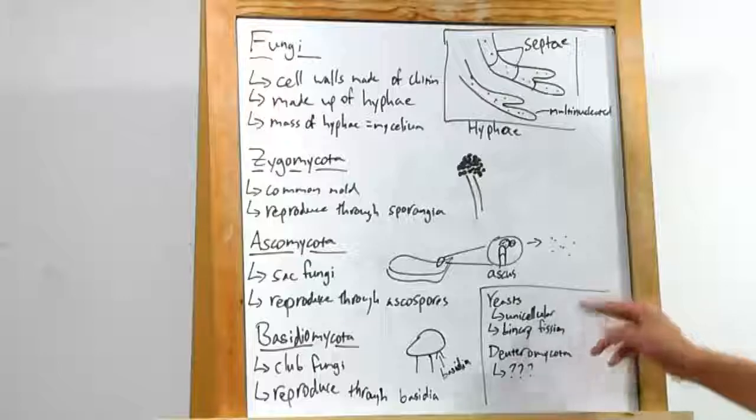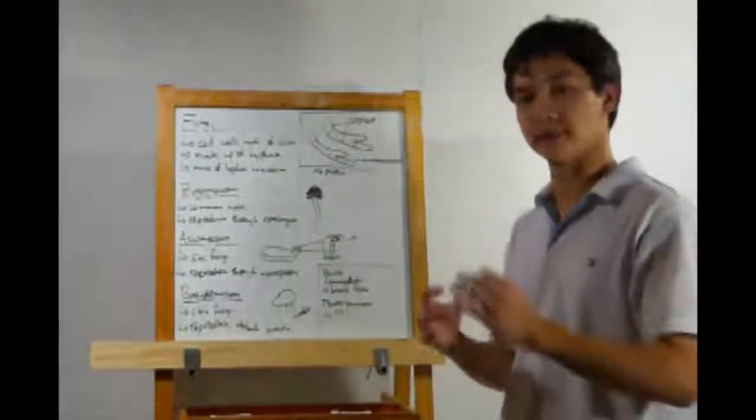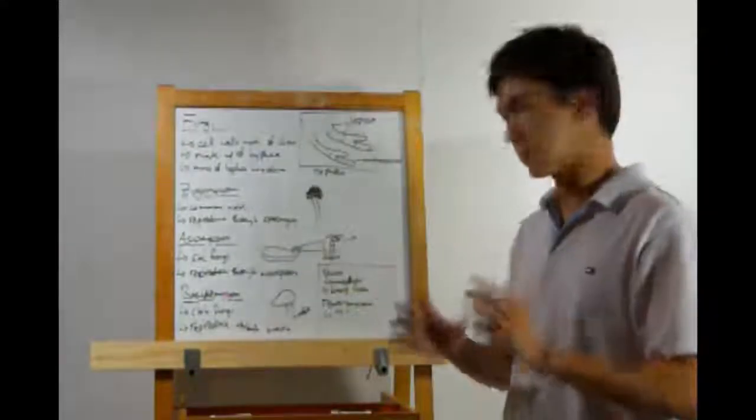And the last two groups we're going to hit are the yeasts. These are the only unicellular fungi, and they reproduce through binary fission, just like bacteria.